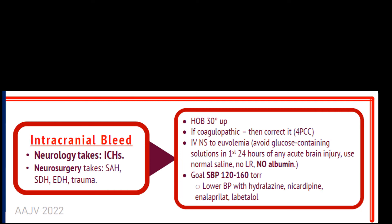In the management of intracranial bleeds, place the head of the bed up 30 degrees — this is a point of balance between arterial perfusion and venous drainage, helping maintain intracranial pressure while decreasing the pressure head on the ruptured vessel. As with ischemic stroke, aim for normal blood volume, as hypovolemia or hypervolemia increase morbidity and mortality. Avoid albumin or lactated Ringer's; prefer normal saline infusion. The goal systolic blood pressure in the first 24 hours should be between 120 and 160 mmHg.